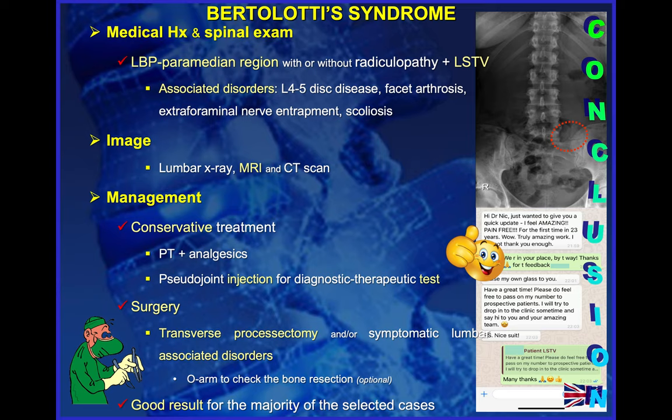Remember to use the proper techniques: the MIS tubular system, microscope, and ultrasonic shaver, which is safe for the nerve root especially at the deep part of the bone. Check at the end, if possible, with advanced imaging technology to be sure there is no bone bridge left between the pseudo-joint and the base of the transverse process. Following those steps gives a chance of very good results for the majority of patients.